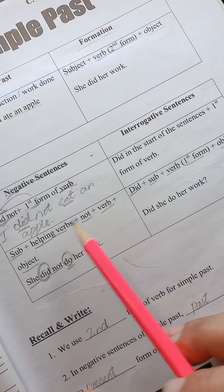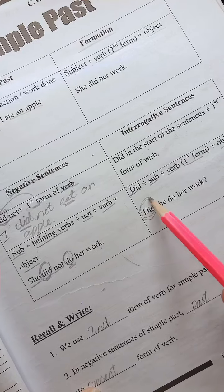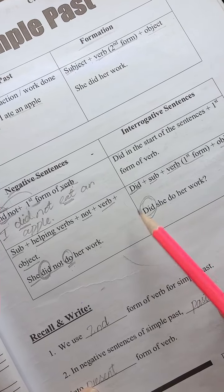Now, when you have did, you have used helping verb. We take in the first form of question. Did she do her homework? What did she do?